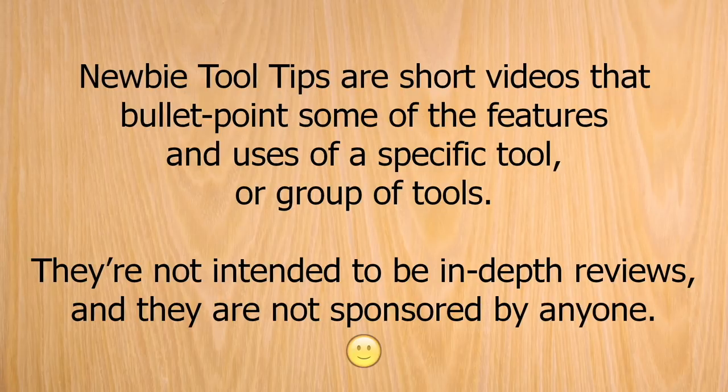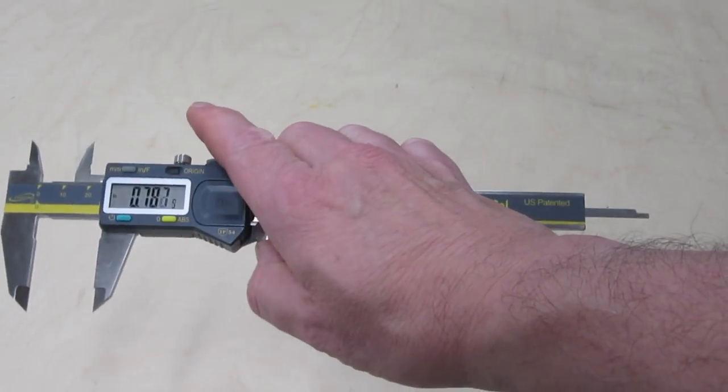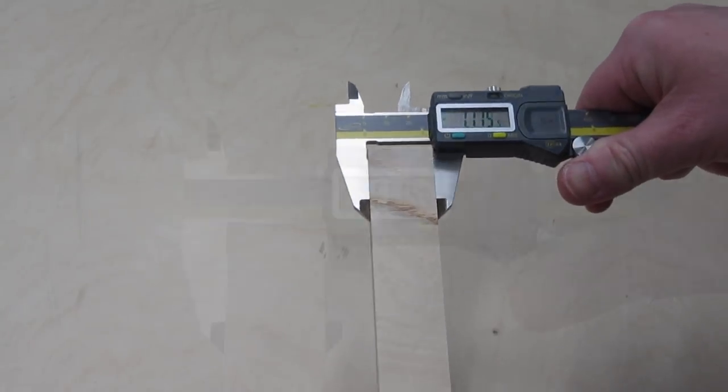They're not intended to be in-depth reviews, and they're not sponsored by anyone. Calipers are great for accurately measuring all sorts of things. With the outside jaws, they can measure the outside of things.